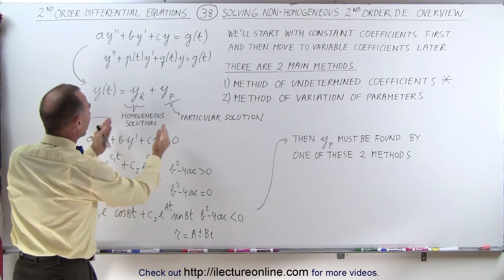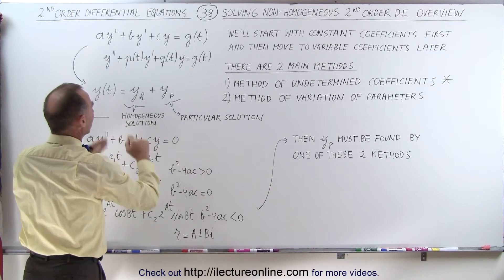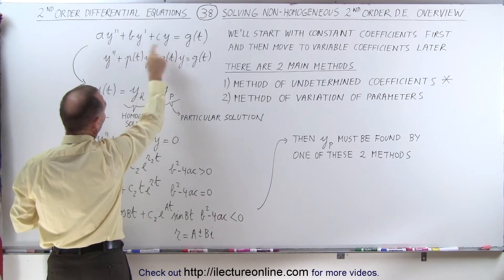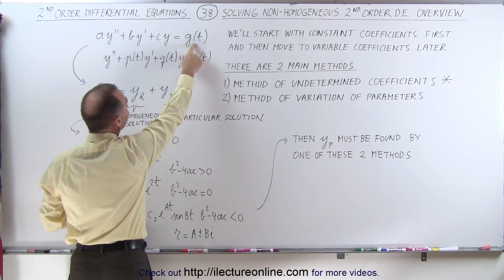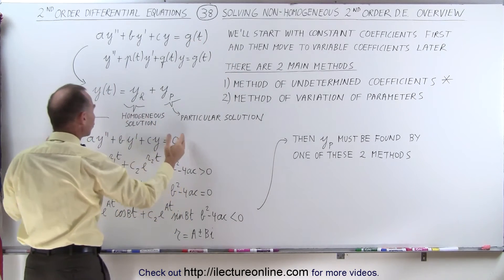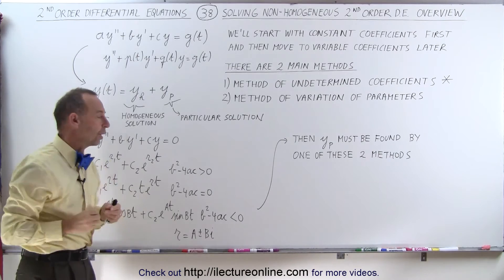The way we do that is we find the homogeneous part first. In other words, we take the equation, either one, and of course we're going to start with the constant coefficients one, and set this equal to zero. Just simply remove it and write it as equal to zero to turn it into a homogeneous equation.